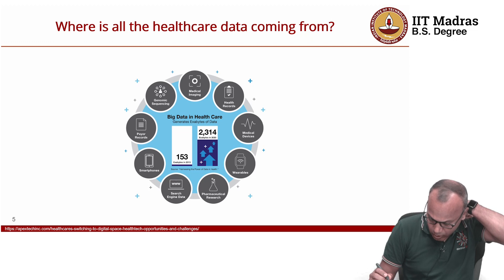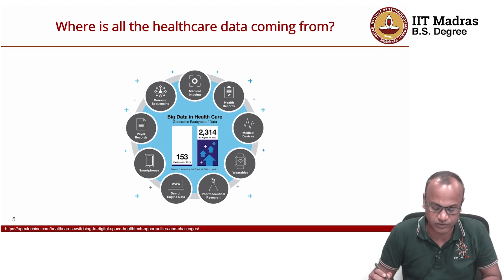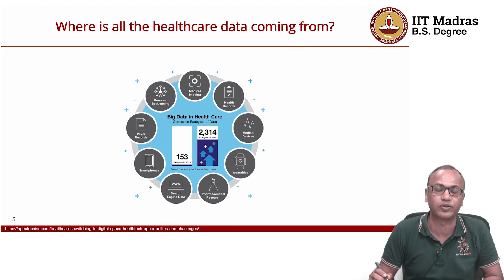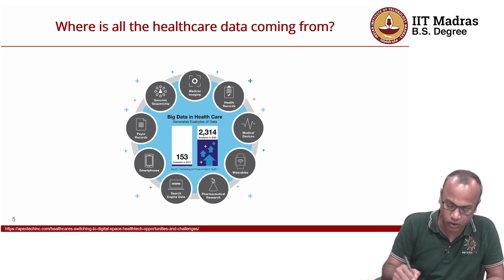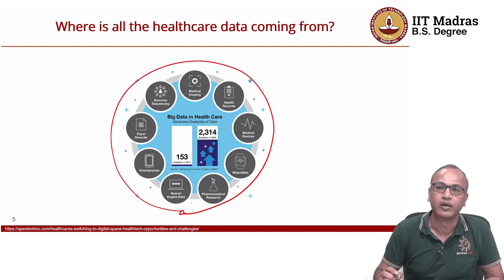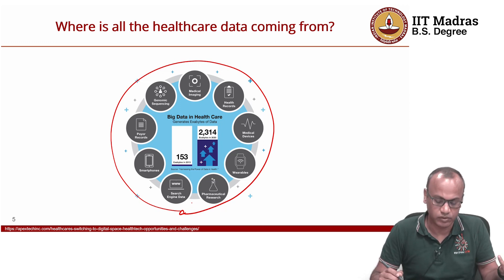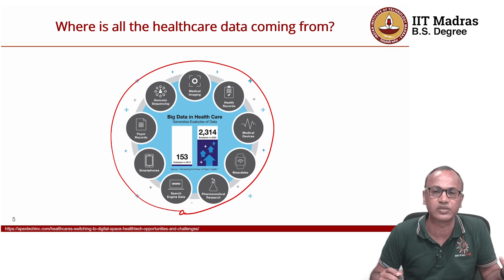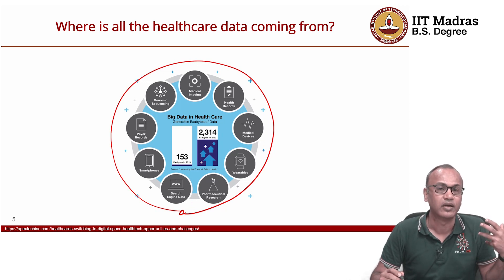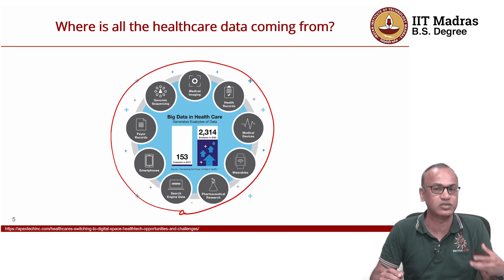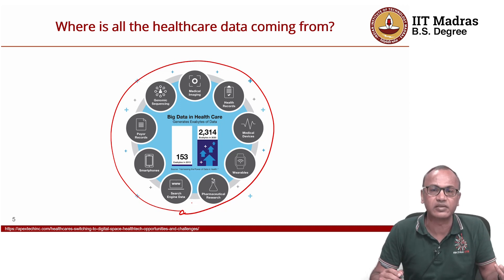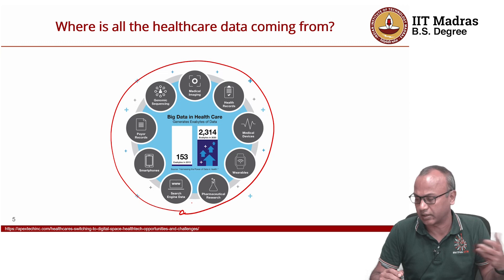In 2013, about 153 exabytes of data was available in the healthcare domain, including all of these varieties of data sets. It is hoped that soon we will be crossing more than 3,000 exabytes — and that is a huge amount of data. To analyze this data and to be able to understand what is happening for a particular disease in a particular population will be a great insight in treating that disease for that particular population. This is something we will deal with in later courses.